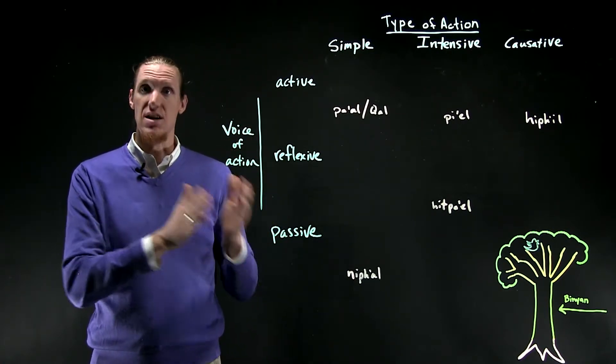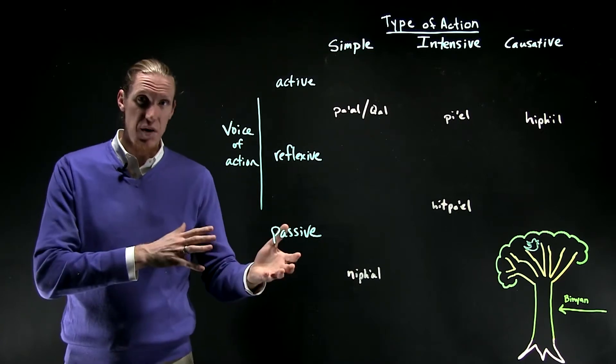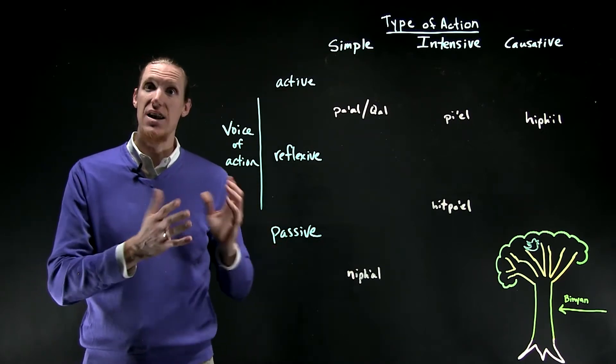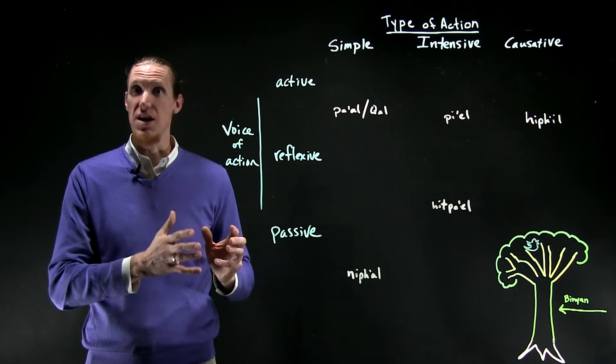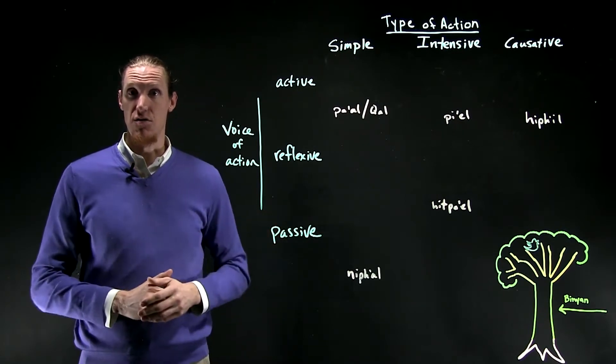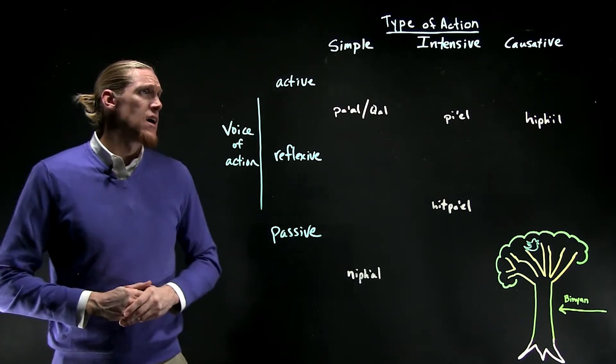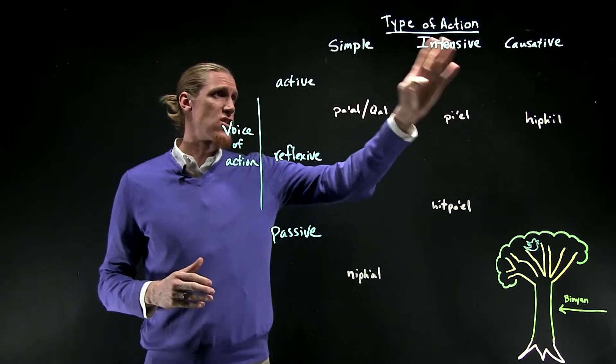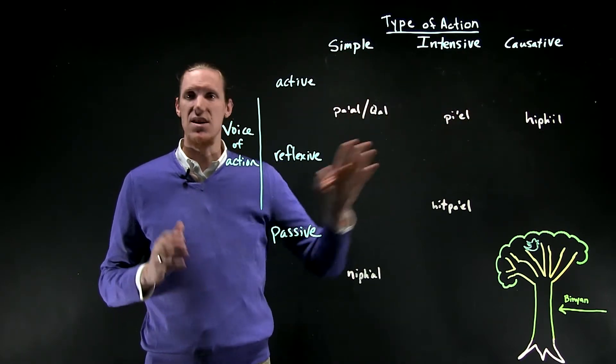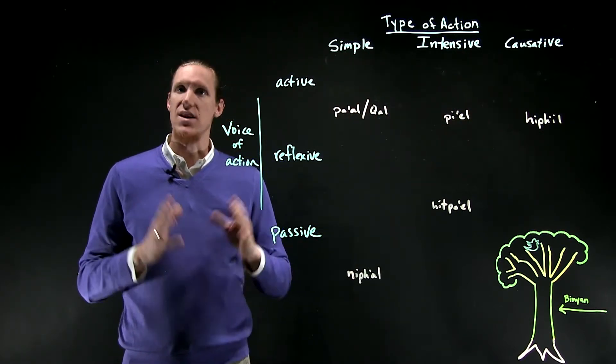In passive, in English, we create the passive voice by adding a form of the verb to be in the verb. Simple, intensive, and causative might be best illustrated with an example.